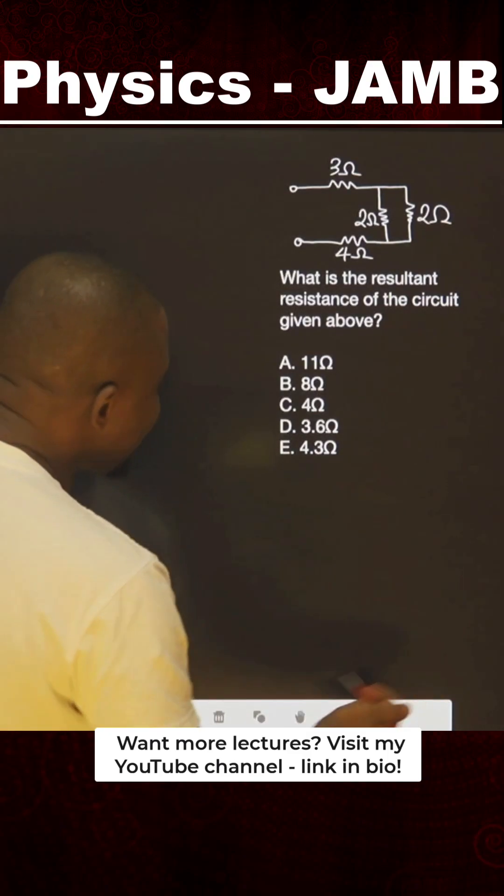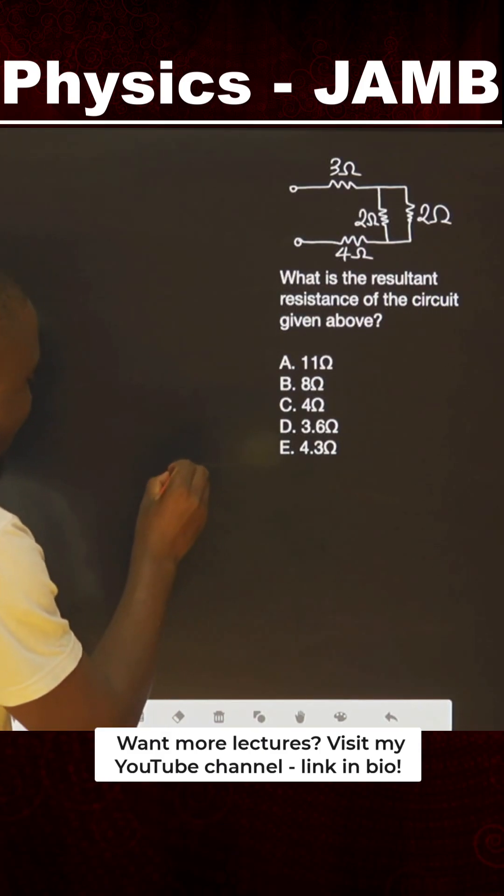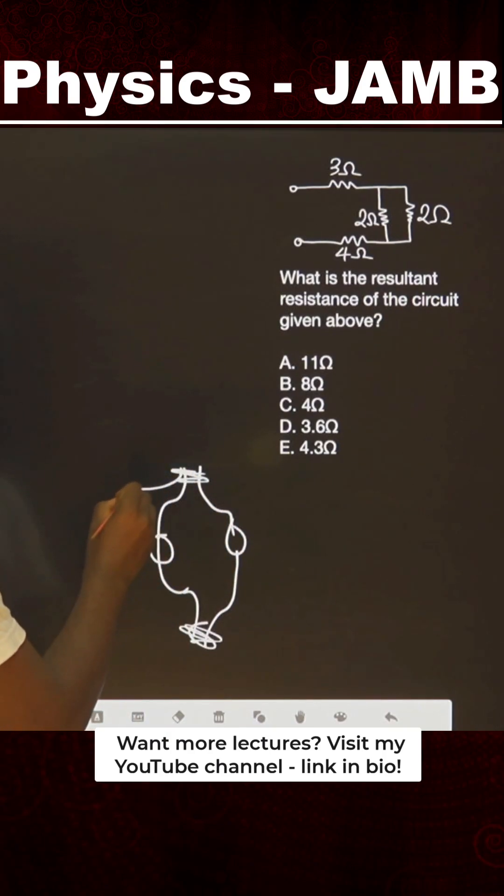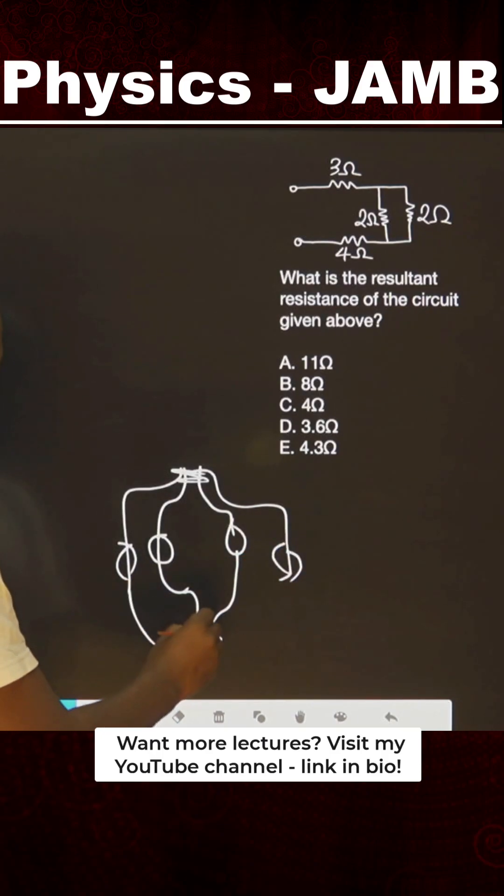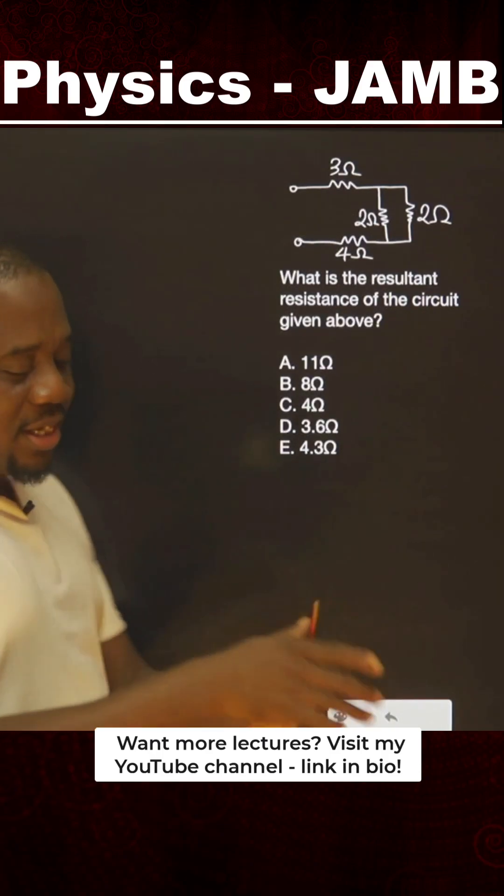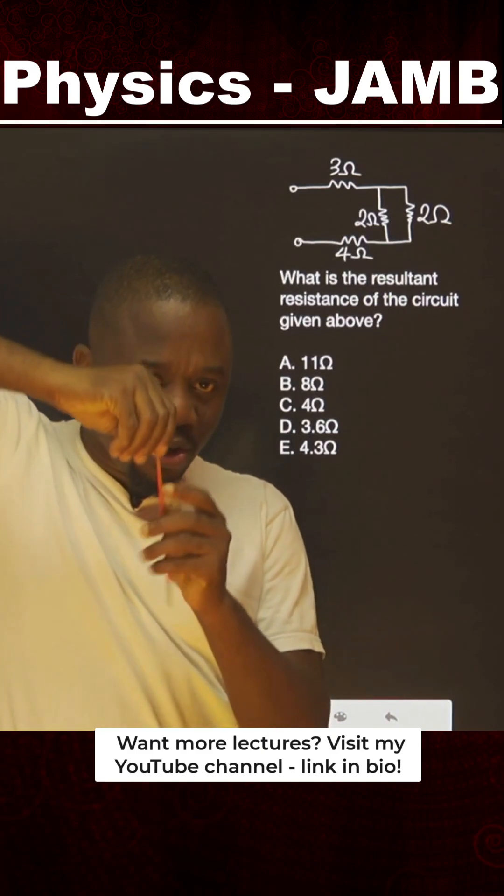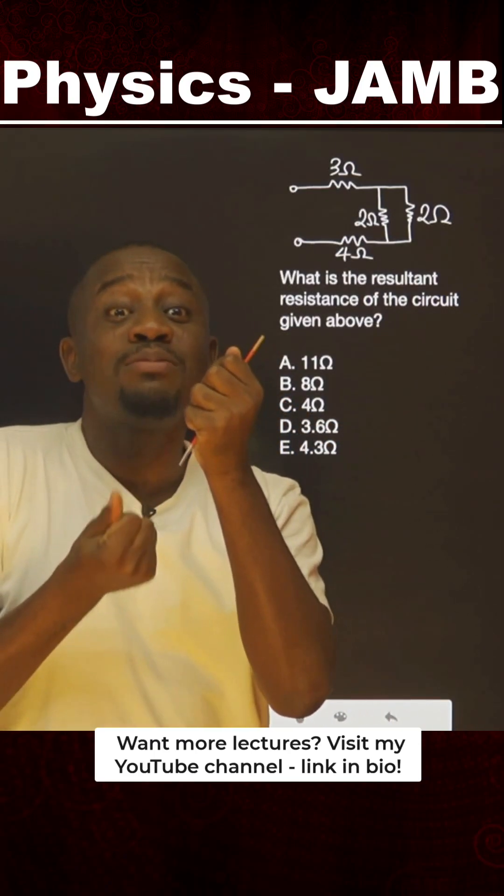But if you have resistances that are in parallel, parallel means this is a resistance here, another resistance here, you join the cables together. You can also bring another one, you join them together just like that. This is a wire with a resistance, you connect it, you are joining them. All the edges you join together, then the other side you join them together. That is parallel connection.